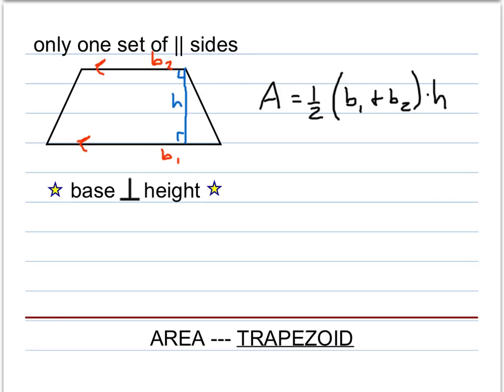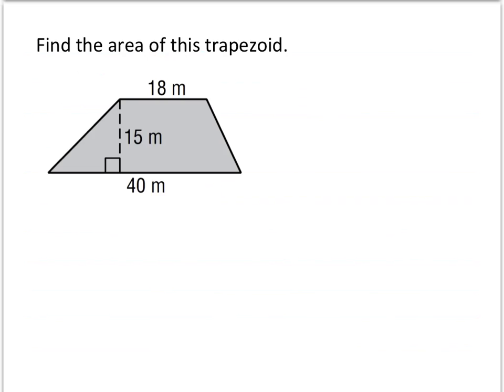Let's apply that to an example problem. Here we have a trapezoid with two bases: a base of 40 meters and a base of 18. The height is 15. To find the area, first remember the area formula, and then we substitute in the values.